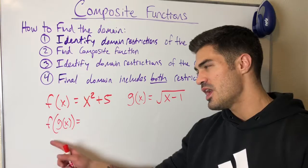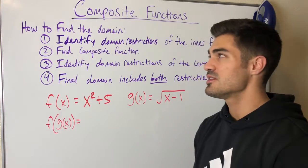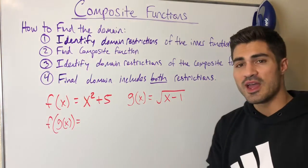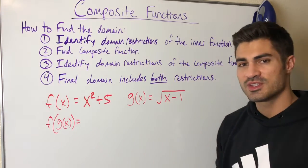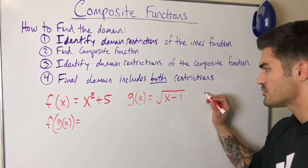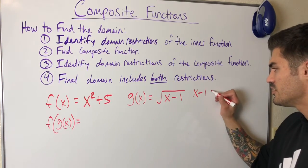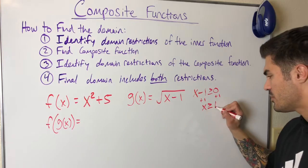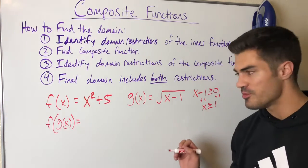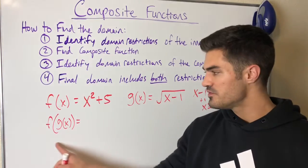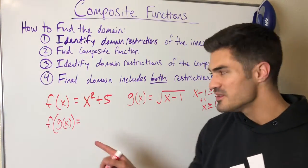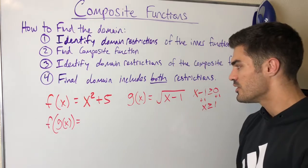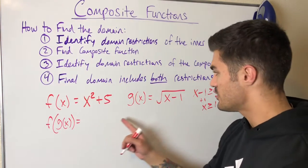Let's do one more example. I encourage you to pause the video and try it on your own. We're going to find f of g of x and its domain. First, we identify domain restrictions of the inner function. Our inner function g(x) has a square root, so everything under the square root must be greater than or equal to zero. Setting x minus 1 ≥ 0 and solving gives x ≥ 1. This is the restriction from the inner function's domain.